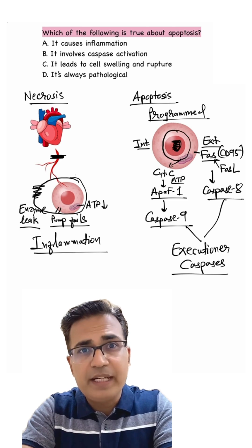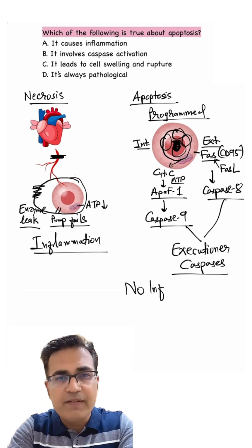Here, the cell shrinks, chromatin condenses, fragments into apoptotic bodies, which macrophages quietly clear with no inflammation.